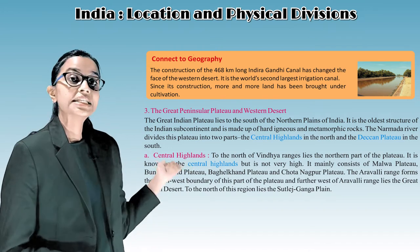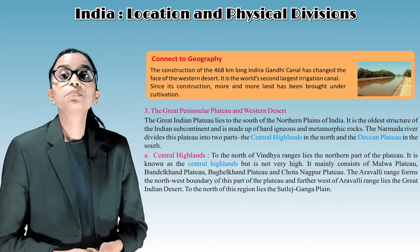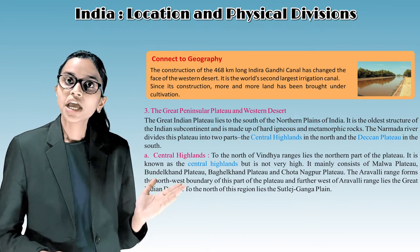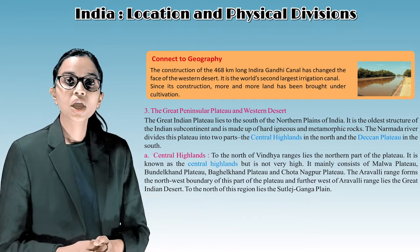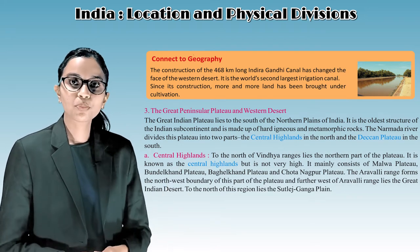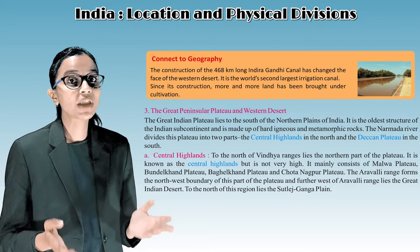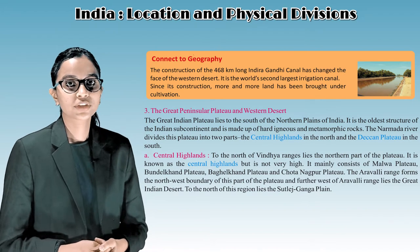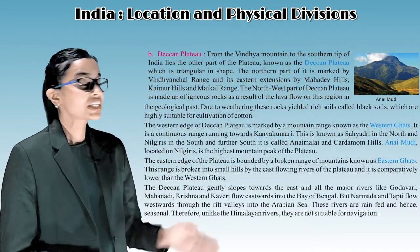The Central Highlands lie to the north of the Vindhya ranges. Though not very high, they mainly consist of the Malwa Plateau, Bundelkhand Plateau, Baghelkhand Plateau, and Chota Nagpur Plateau. The Aravalli ranges form the northwest boundary of this part of the plateau. Further west of the Aravalli ranges lies the Great Indian Desert, and to the north lies the Sutlej-Ganga Plain.